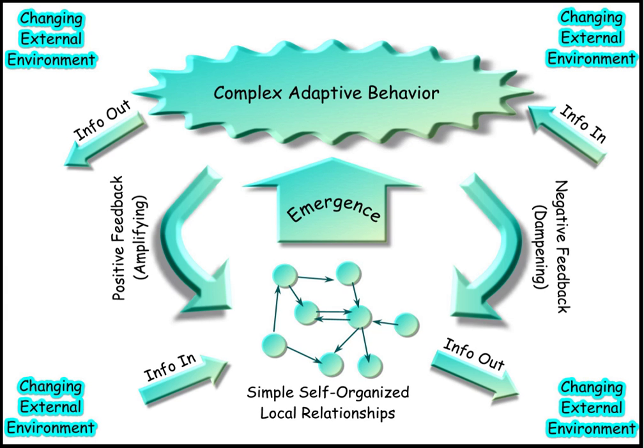Such feedback can vary in quality. This is known as recurrency. The overall behavior of the system of elements is not predicted by the behavior of the individual elements. Such systems may be open, and it may be difficult or impossible to define system boundaries. Complex systems operate under far from equilibrium conditions — there has to be a constant flow of energy to maintain the organization of the system. Complex systems have a history: they evolve and their past is co-responsible for their present behavior. Elements in the system may be ignorant of the behavior of the system as a whole, responding only to the information or physical stimuli available to them locally.